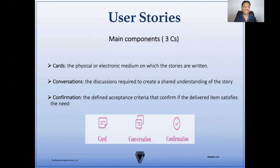The cards are the physical or electronic medium in which the stories are written. So if we are writing them on sticky notes, or electronically in a project management software like JIRA or TFS, this is the card. The conversations are the discussions required to create a shared understanding of that story. User stories themselves are typically high level and don't provide enough information for everyone to be on the same page, so this is where we start collaboration and have those discussions to outline what we're looking for in our confirmation. And then the confirmation is the defined acceptance criteria that confirms if the delivered item satisfies the need.